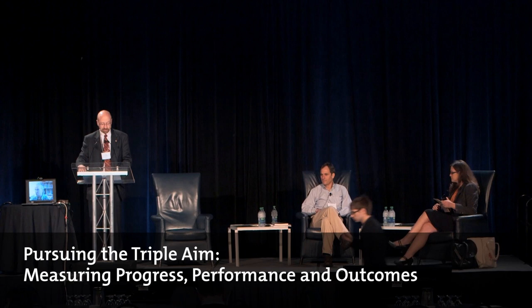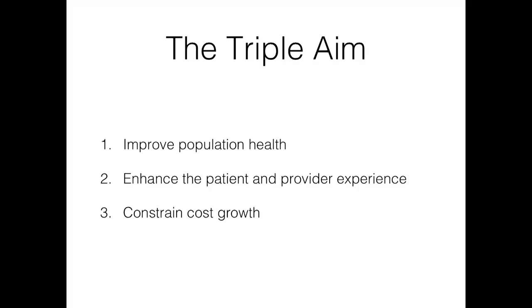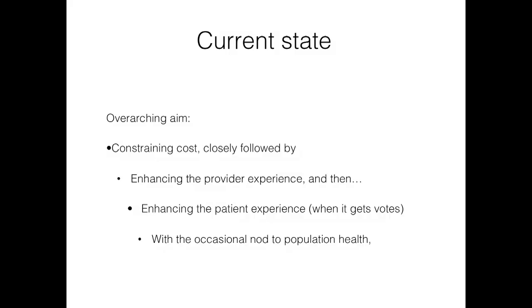Good morning. Before I get started on the first aim — using population health data and measurement — I want to set the stage with a few comments on the need to balance between these three aims due to our current state in Canada, which seems a little bit unbalanced. The triple aim we're focusing on is listed on the slide here, and I'm going to suggest that our current state suggests we've lost our way a little bit.